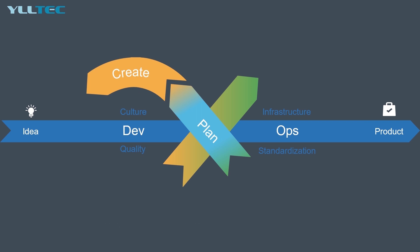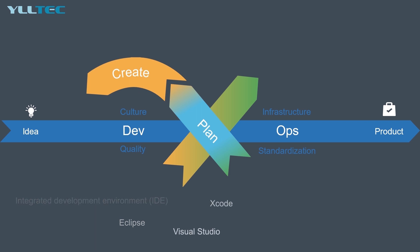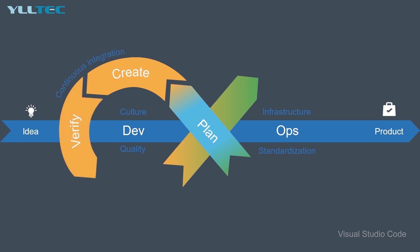Some common integrated development environments are Eclipse, Microsoft Visual Studio, and Xcode. You also have various source code repositories — for example, Git and GitHub — and lightweight code editors like Notepad++ and Visual Studio Code. Once you finish creating your software solution, you move to the verify stage of the DevOps toolchain, which you do typically in a continuous process called continuous integration.